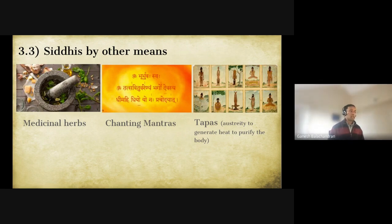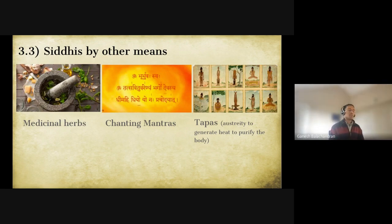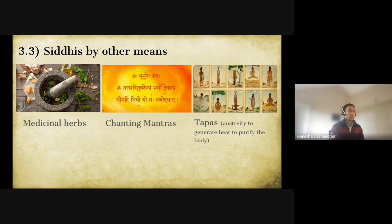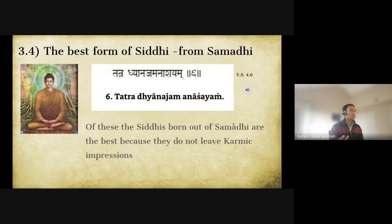Siddhis can also be attained through medicinal herbs — though commentators don't specify what herbs, and scriptural terms don't accept interpretations like marijuana. By chanting mantras one can definitely attain siddhis. By tapas (austerity), people perform practices like standing on the head in various poses, generating heat to purify the body. But the best form of siddhi, Patanjali says, is from samadhi — because the siddhis born from meditation do not leave karmic impressions.